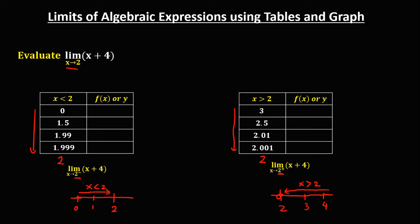To solve for y or f(x), we substitute these values into the equation. If x = 0, y = 4. If x = 1.5, then 1.5 + 4 = 5.5. If x = 1.99, then 1.99 + 4 = 5.99. And 1.999 + 4 = 5.999. Observe that the values for y approach positive 6, so this left-side limit is equal to positive 6.